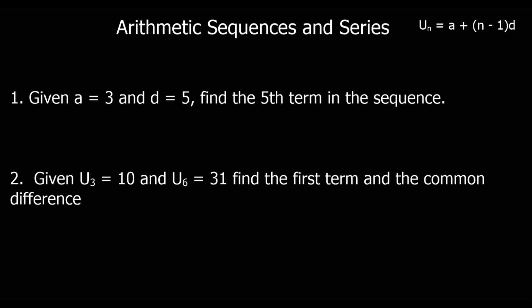Okay, we're going to practice using the formula. We've got the formula up here, un is a, plus n minus 1, times the difference. a, the first term is 3, and it goes up in 5's. What is the fifth term?